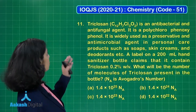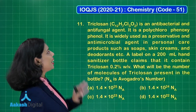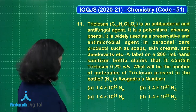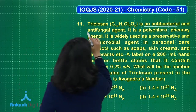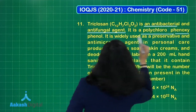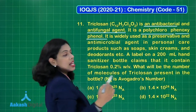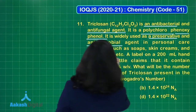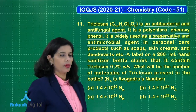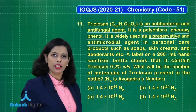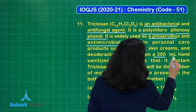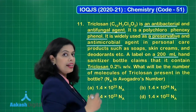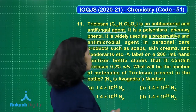Now let's take question number 11. Triclosan, molecular formula C₁₂H₇Cl₃O₂, is an antibacterial and antifungal agent. It is polychlorophenoxy phenol, widely used as a preservative and antimicrobial agent in personal care products such as soaps, skincare creams, and deodorants. A label on a 200 ml hand sanitizer bottle claims that it contains triclosan at 0.2% weight by volume.